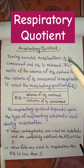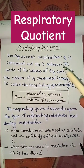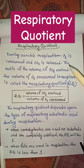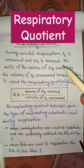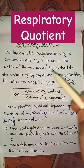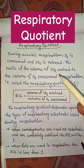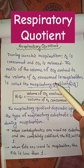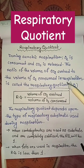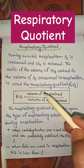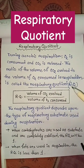What is respiratory quotient? During aerobic respiration, oxygen is consumed and carbon dioxide is released. The ratio of the volume of carbon dioxide evolved to the volume of oxygen consumed in respiration is called the respiratory quotient.